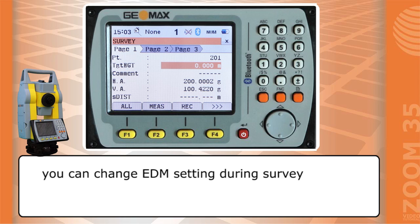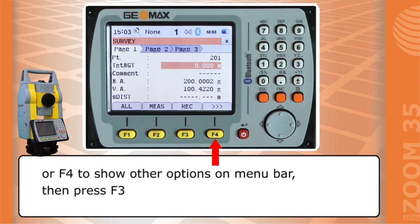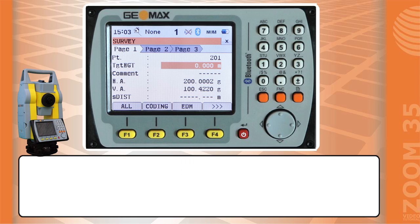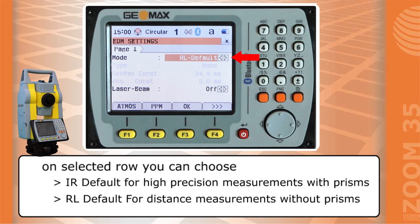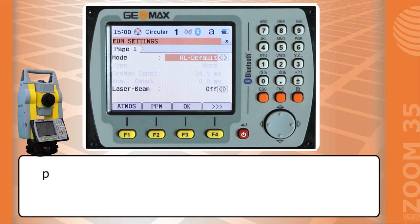You can change EDM setting during survey. Press on screen information about EDM. F4 to show other options on menu bar. Then press F3. On selected row you can choose IR default for high precision measurements with prisms, or RL default for distance measurements without prisms. Press F3 OK to confirm.